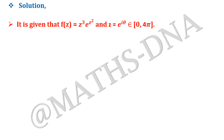In the question it is given that f(z) = z³·e^(z²), and z = e^(iθ) where θ belongs to 0 to 4π, and we have to find the value of I = (1/2π) ∫₀^(4π) [f'(z)/f(z)] dz.